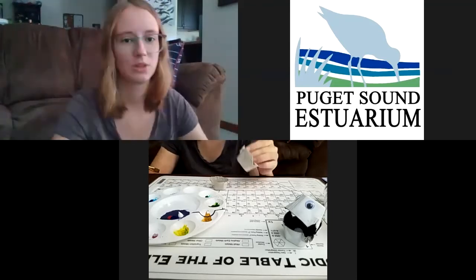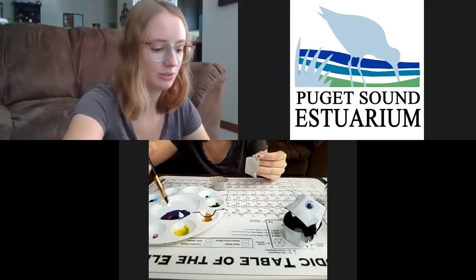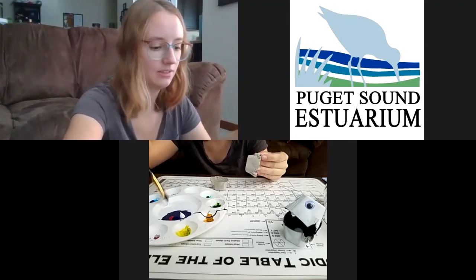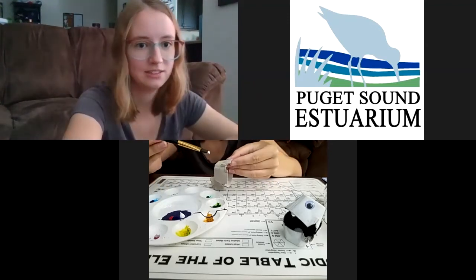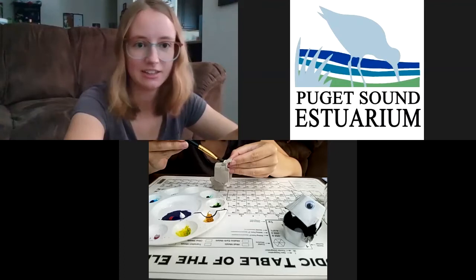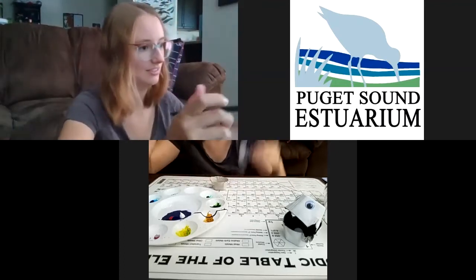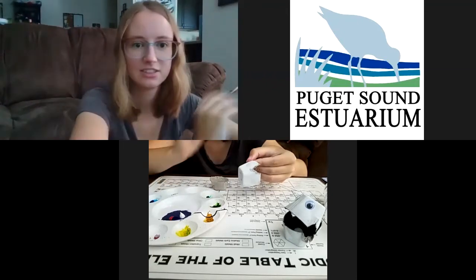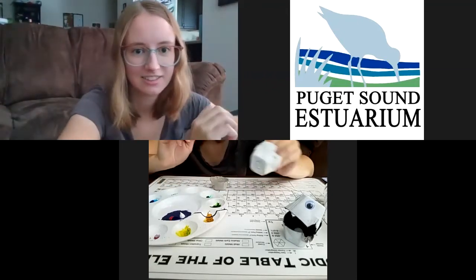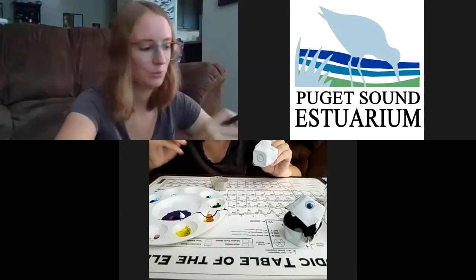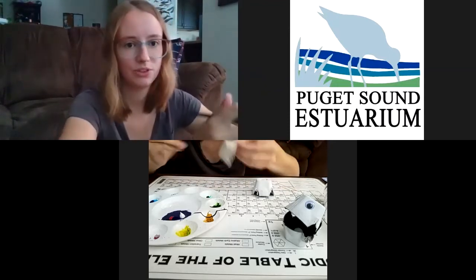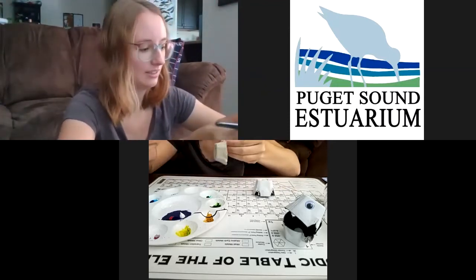Next, we're going to take some white paint, and we're going to paint the outside of our egg cartons. You want to do that with both of them. Paint the outside.